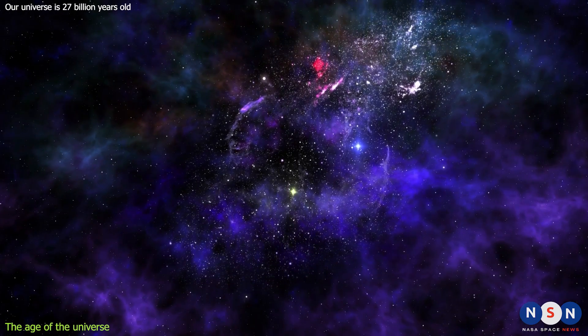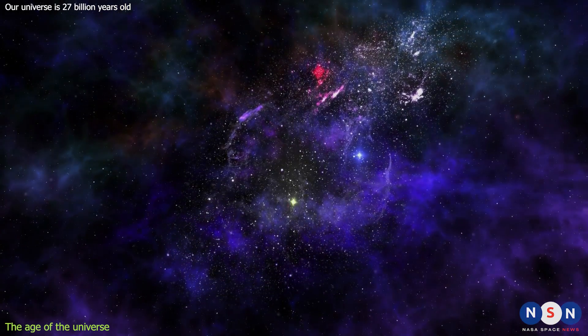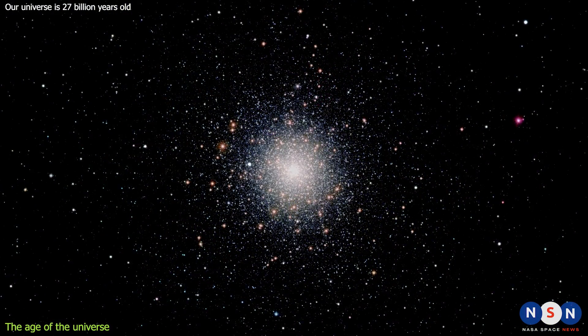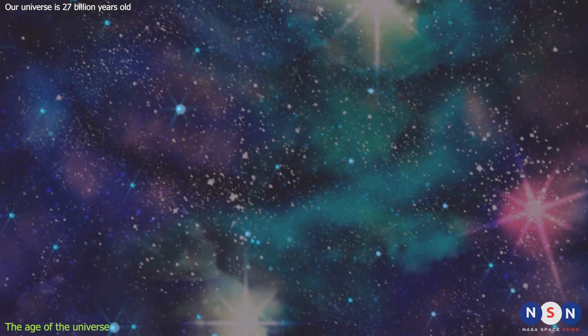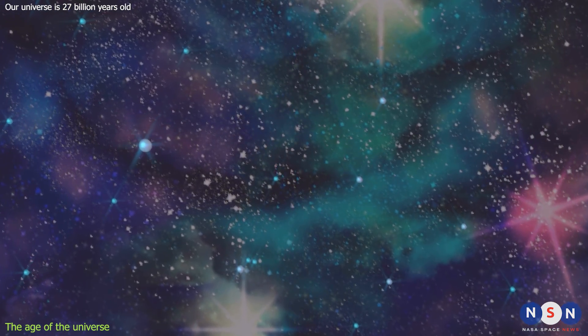The second method is based on studying the oldest stars in the universe, which are found in ancient globular clusters. By measuring their brightness and color, we can estimate their age and infer the minimum age of the universe.